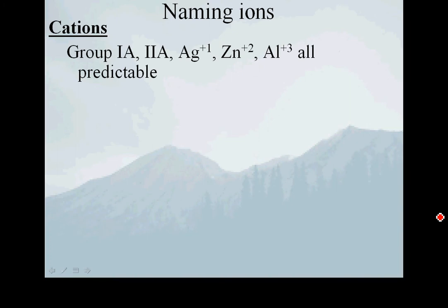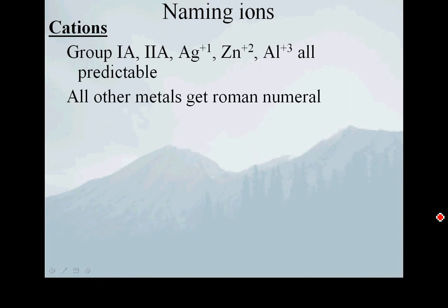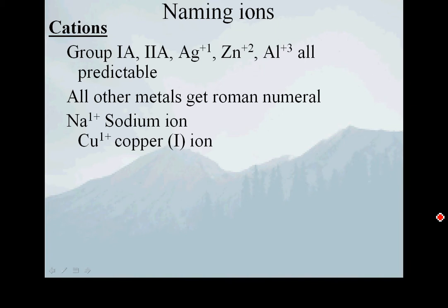For the group 1A and group 2A elements, silver, zinc, and aluminum all have predictable charges. Every other metal needs a roman numeral. So for sodium, we don't have to say sodium 1 ion — we just say sodium ion, because sodium can only have a plus 1 charge; it's a group 1A metal. I don't have to say silver 1 ion; I can just say silver ion.